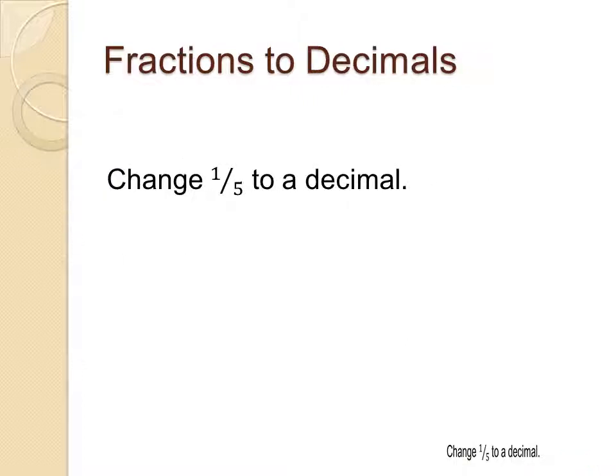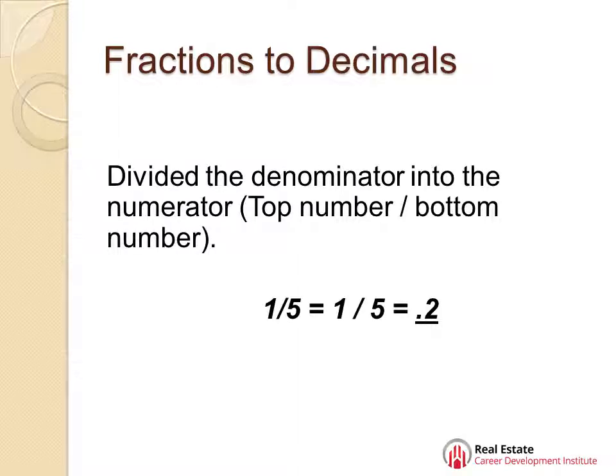Fractions to decimals. You need to change 1 fifth to a decimal. How are you going to do that? Divide the denominator into the numerator—the top number into the bottom number. 1 divided by 5, that's what you put in your calculator. The number 1, hit your division key, hit the 5, and it equals .2.